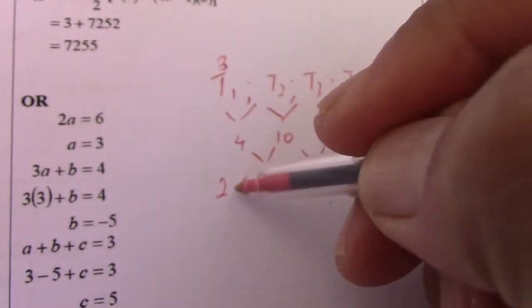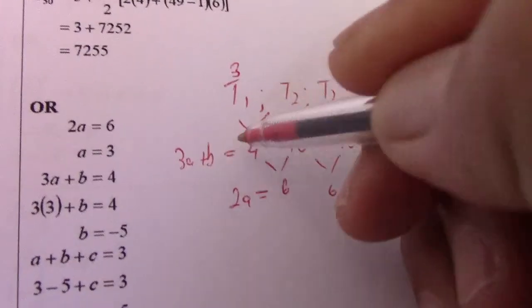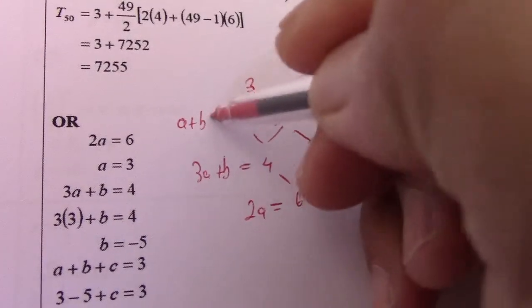So I can say 2a equals 6, so a equals 3.